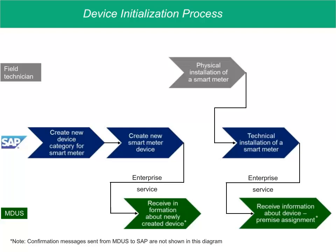Before a smart meter can be used, it must be initialized to set up bi-directional communication between the smart meter, the MDUS, and SAP for utilities. The process starts when a clerk enters a goods receipt for the smart meter in SAP for utilities, which also creates the device's master data. At this point, SAP for utilities sends a request to the MDUS system to create a representation for the device in its system. The MDUS sends back a confirmation message.